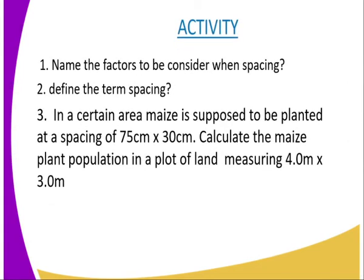We have come to the end of today's lesson, but I will give you some activity. Question one: name the factors to be considered when spacing. Question two: define the term spacing. Question three: in a certain area, maize is supposed to be planted at a spacing of 75 centimeters by 30 centimeters — calculate the maize plant population in a plot of land measuring 4.0 meters by 3.0 meters.